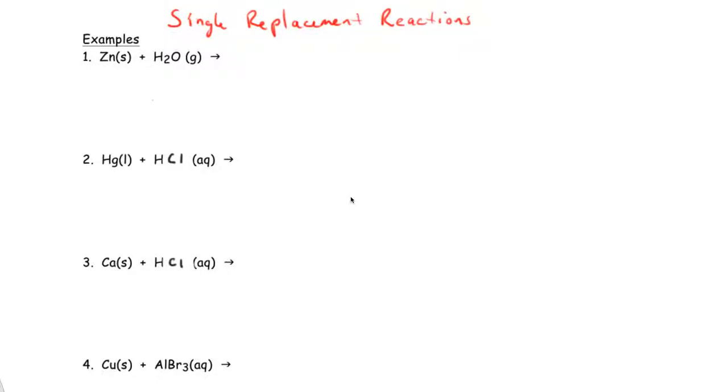Let's look at some single replacement reactions and see if they will occur or not and predict what the products will be. It will be helpful if you have in front of you the list of metals, which we call the activity series, and the order of metals in the way they react.